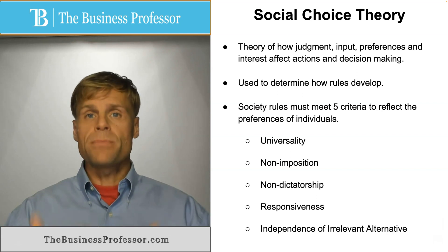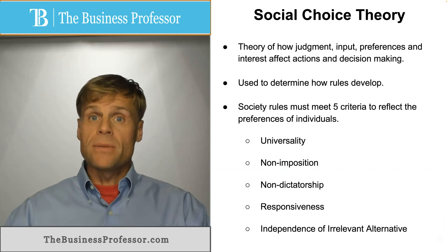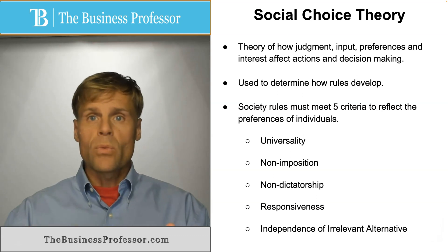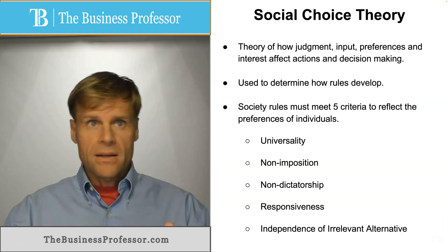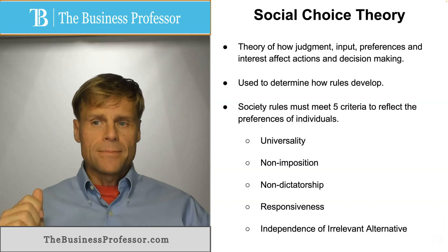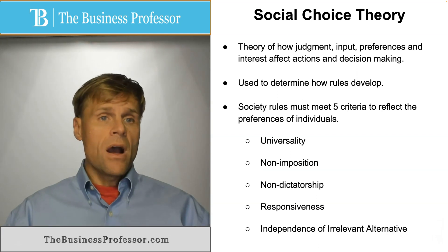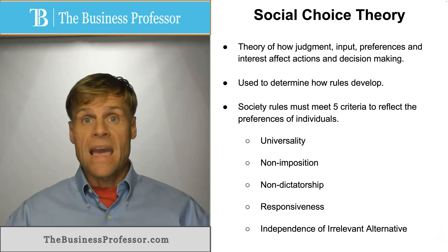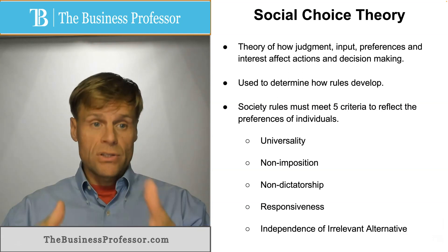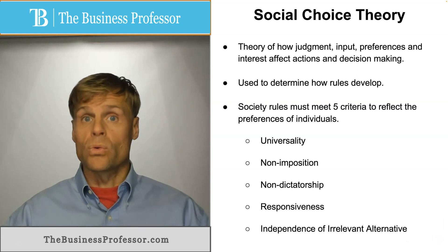There's a level of responsiveness to the rule, meaning that collectively people do have to react to it in some way, shape, or form, and that people's lives are affected equally. And the applicability of the rule is independent of any alternative courses of action that are irrelevant to the purpose or underlying objectives of the rule itself.